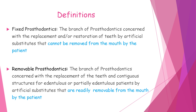Let's move on to the definitions of these branches. Fixed prosthodontics is the branch of prosthodontics concerned with the replacement and/or restoration of teeth by artificial substitutes that cannot be removed from the mouth by the patient. Removable prosthodontics is the branch concerned with the replacement of teeth and contiguous structures for edentulous or partially edentulous patients by artificial substitutes that are readily removable from the mouth by the patient.